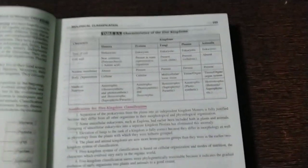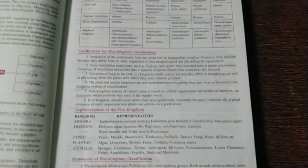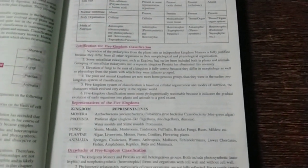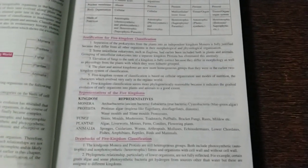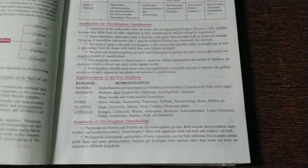Okay, this is a flow chart. This is also given in NCERT. Yeah. This is justification that why five kingdom classification is appropriate by R.H. Whittaker.